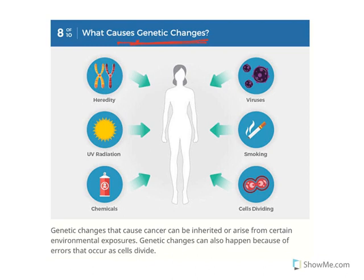What causes genetic changes? First, hereditary — genetically some people have more expression of oncogenes. Second, UV radiation — there are three kinds: A, B, and C. UV-C is filtered by the ozone layer. UV-B is very powerful, and higher exposure to UV-B may cause skin cancer.